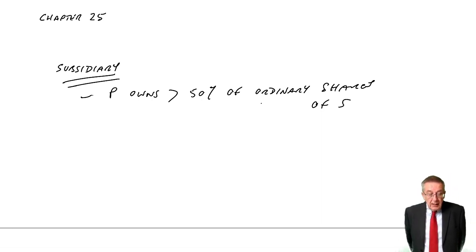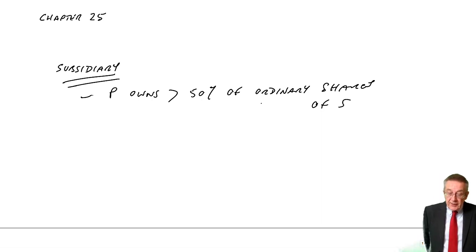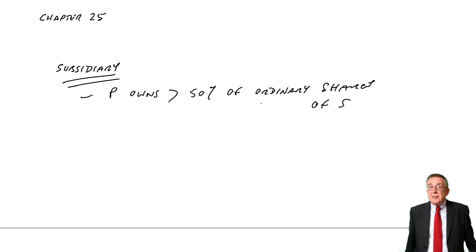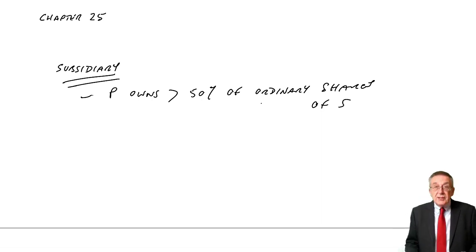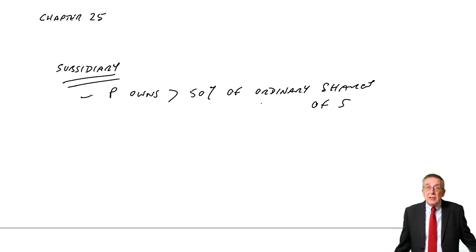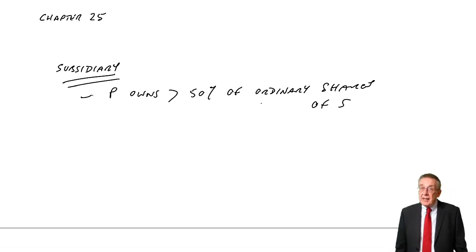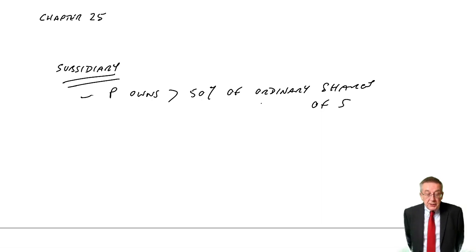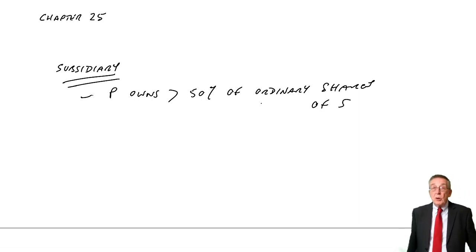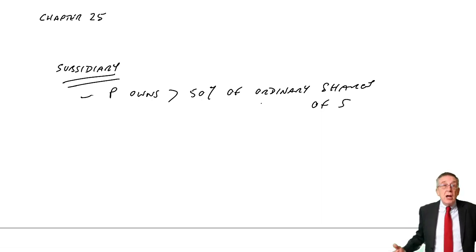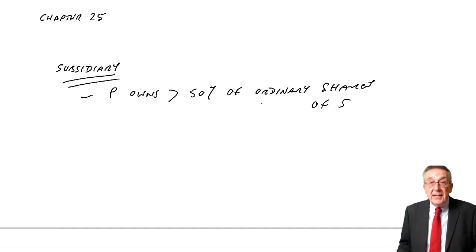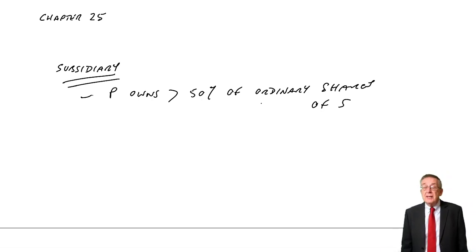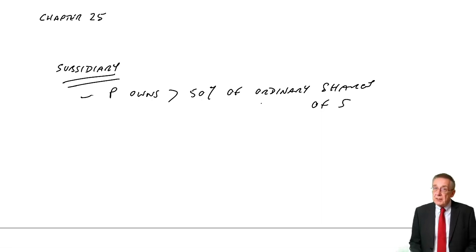The second situation is power to govern the financial and operating policies of the entity under statute, law, or agreement. If P has the power to dictate what the company does, even without owning more than half the shares, then P has control and consolidated accounts must be prepared. The third situation is power to appoint or remove the majority of the directors — or whoever else controls the company. If we can appoint the directors, we can dictate what the other company does, and regardless of our shareholding, we control and must produce consolidated accounts.